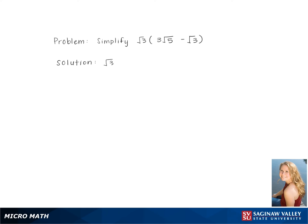To simplify square root 3 times 3 square root 5 minus square root 3, we start by distributing square root 3 to each of the terms, giving us square root 3 times 3 square root 5 minus square root 3 times square root 3.